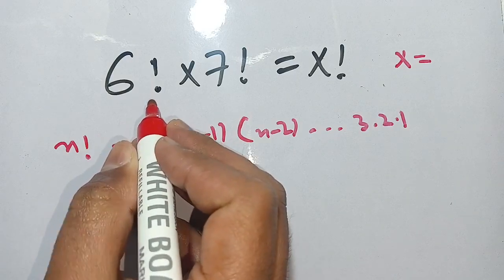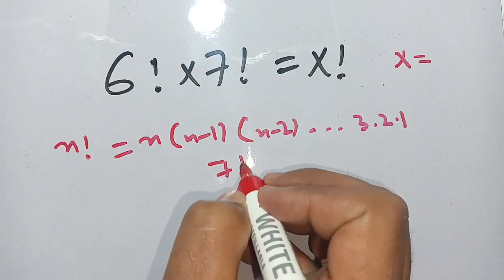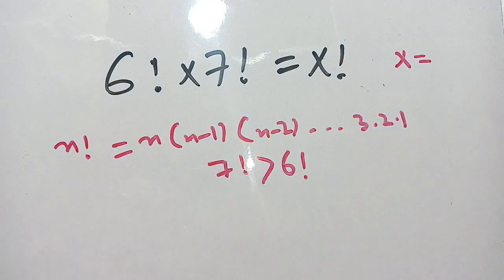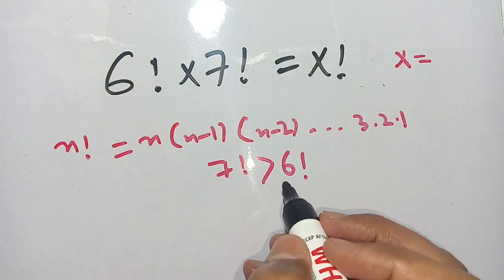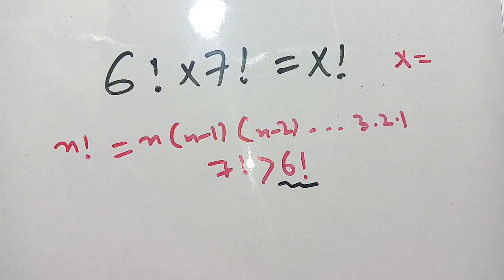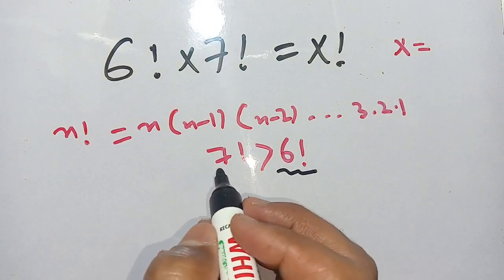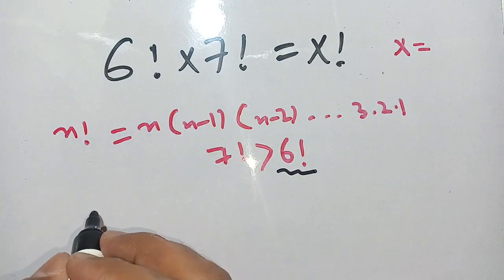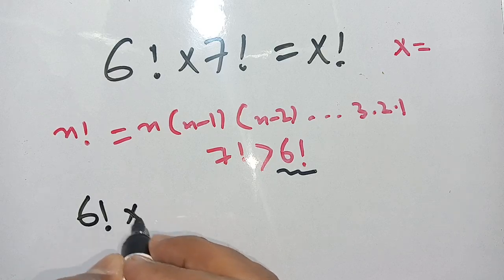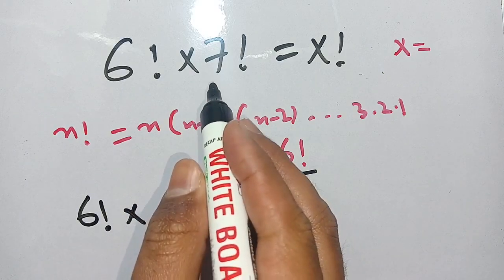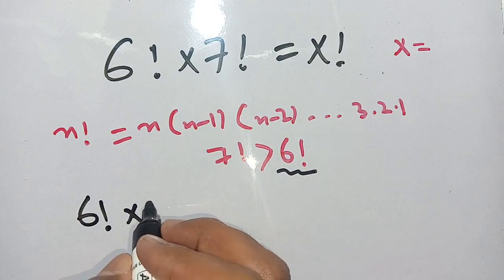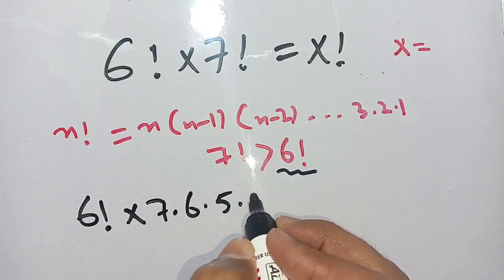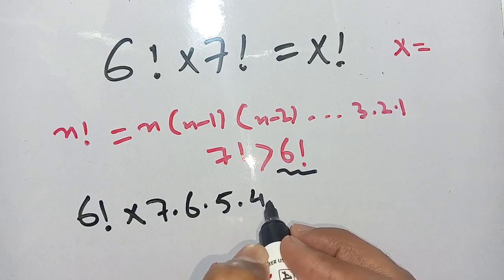We use this definition of n factorial here. Since 7 factorial is greater than 6 factorial, we keep 6 factorial as it is and we open 7 factorial. Applying the definition of n factorial, we get 6 factorial as it is, and 7 factorial becomes 7 times 6 times 5 times 4 times 3.